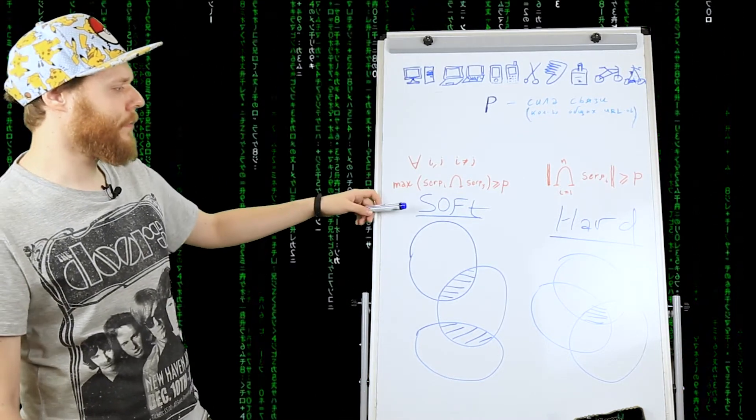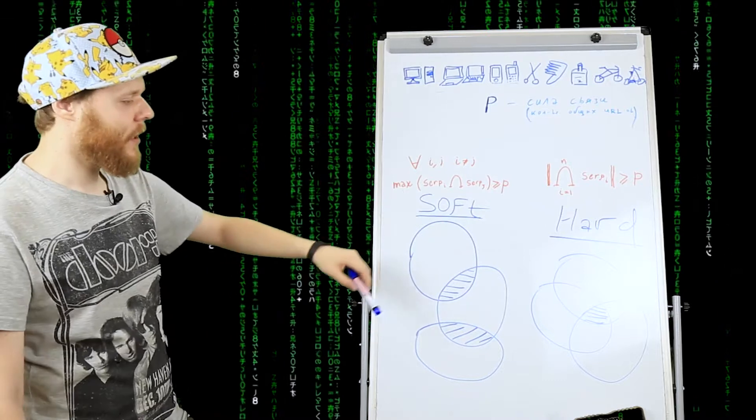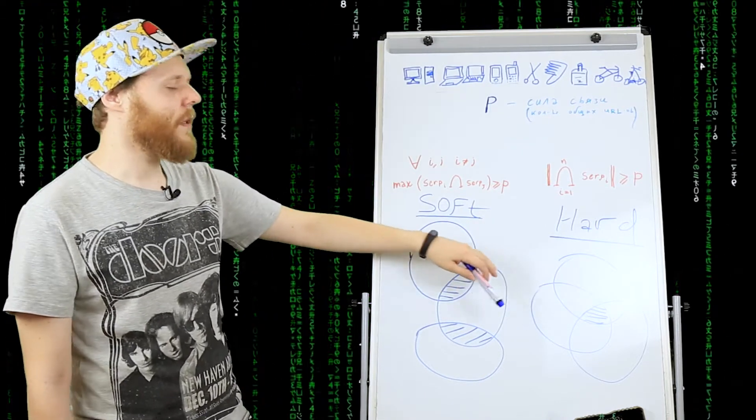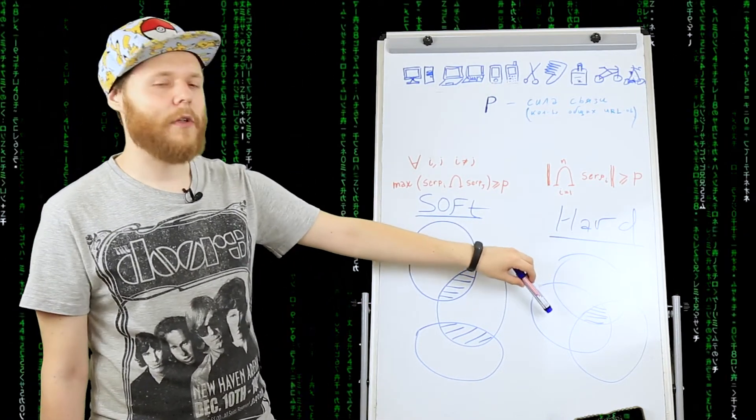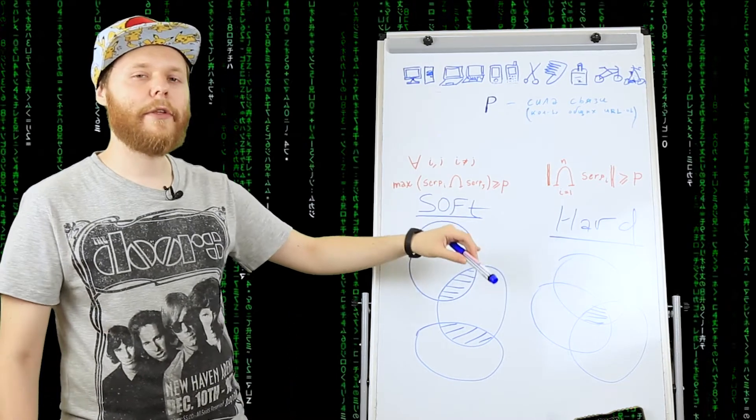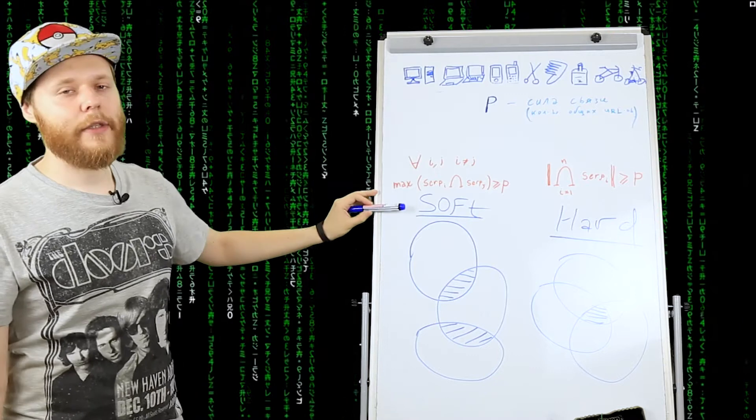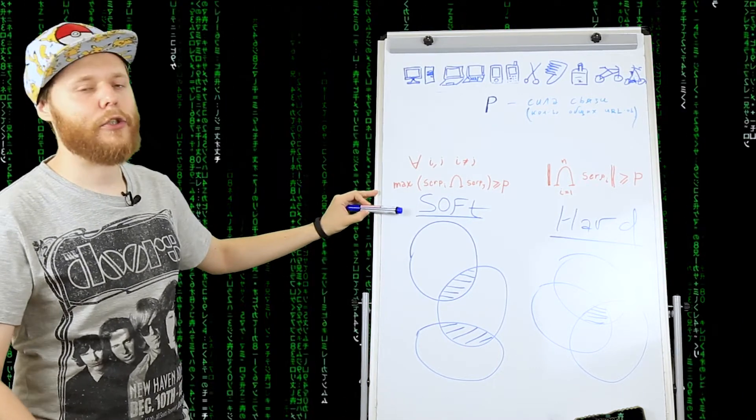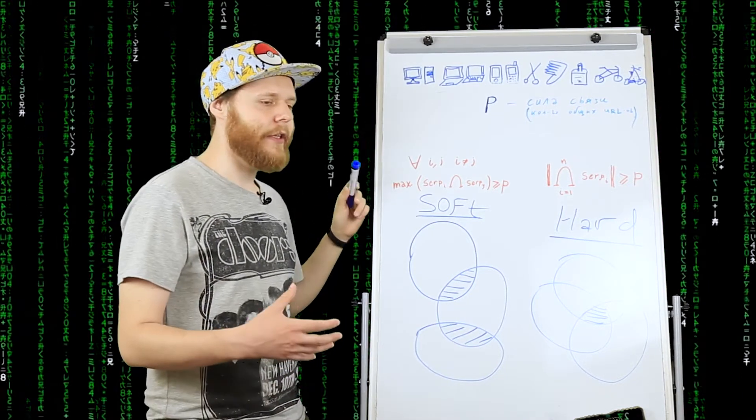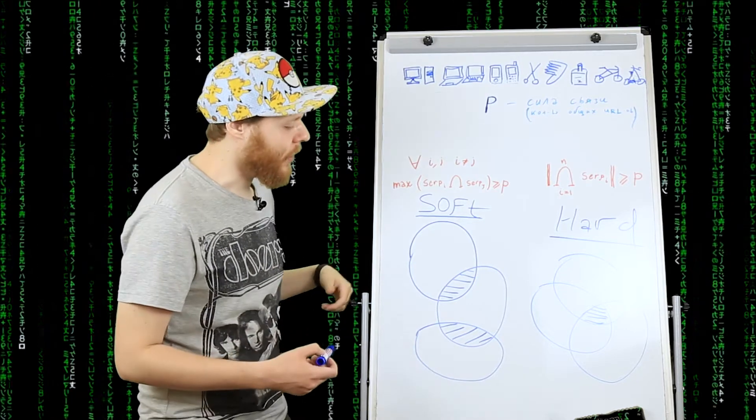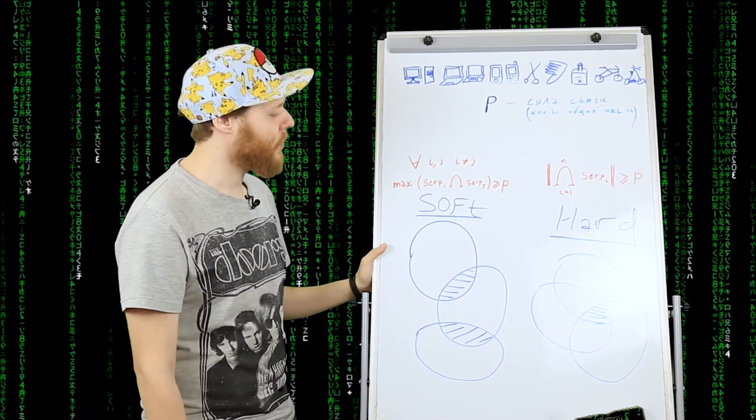Для начала рассмотрим Hard или Soft. Hard кластеризация предполагает, что все ключевики в одном кластере должны иметь как минимум P общих урлов.